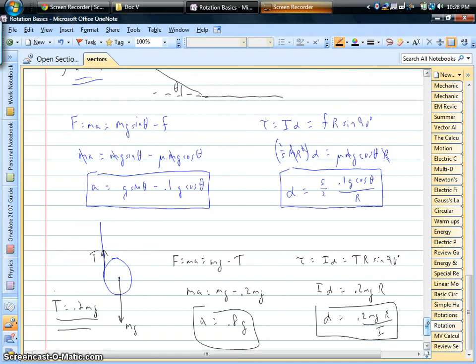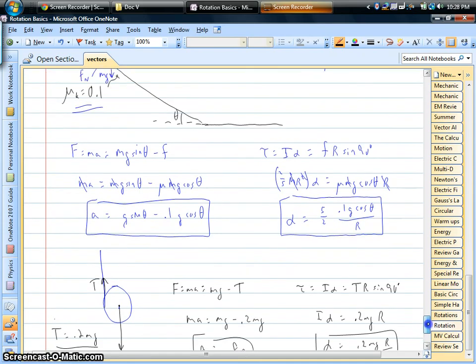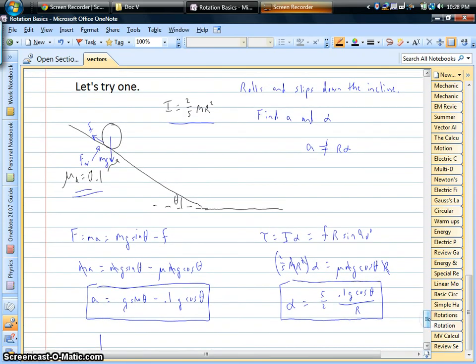F equals ma for linear motion. Torque equals i alpha for the rotational motion. And we can solve these things. So I hope this helps. I hope this takes a little bit of the fear out of rolling and slipping at the same time. But they're very doable. So until next time, we'll see you later.